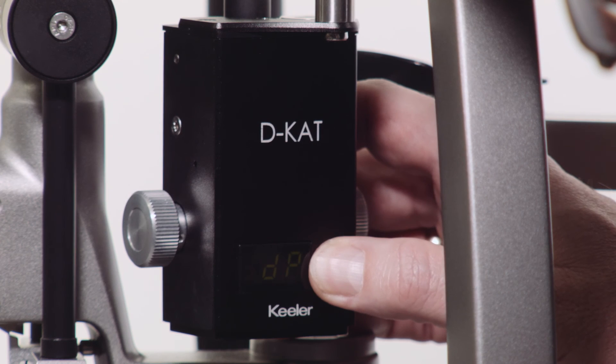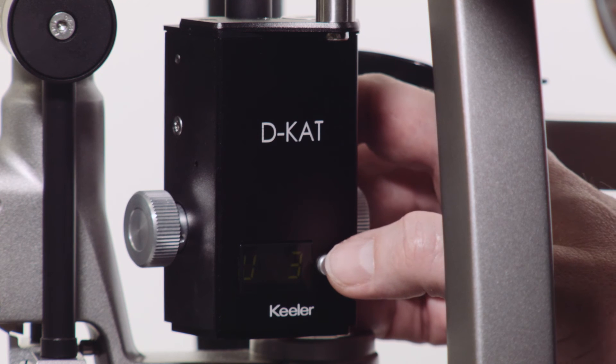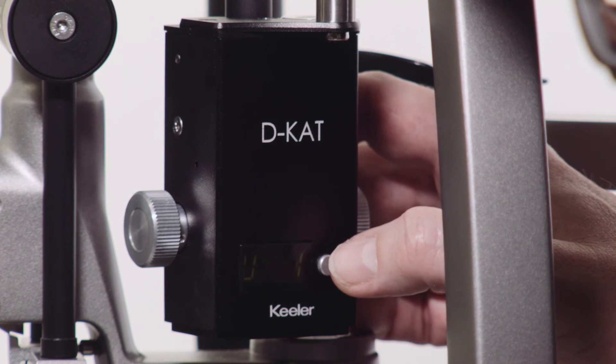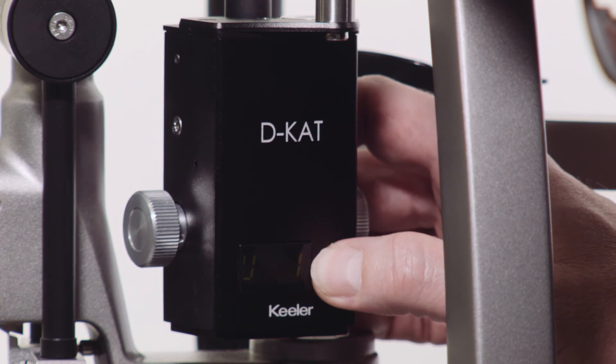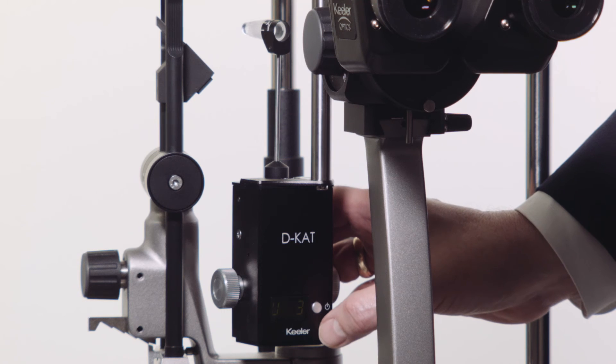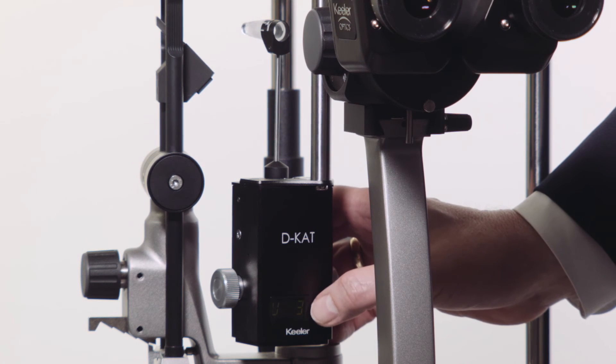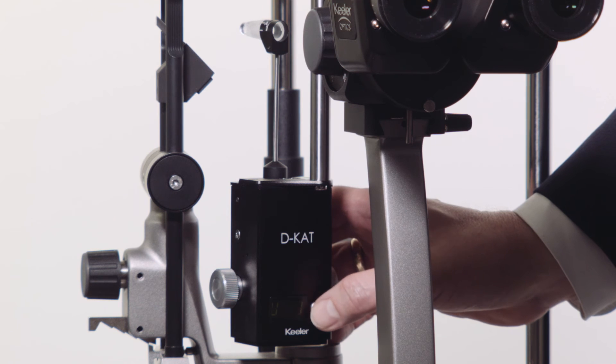Volume can also be set by pressing the function button for more than three seconds and then again for three seconds once D-P is displayed. V will be displayed and the function button can be used to toggle between volumes 0, 1, 2, and 3.